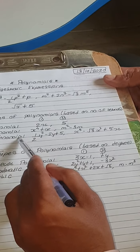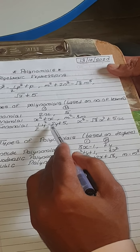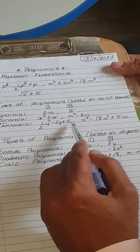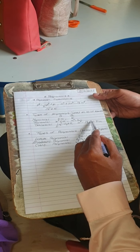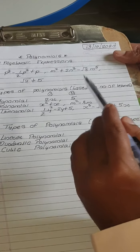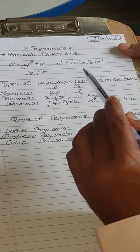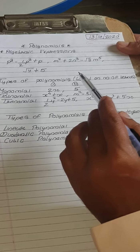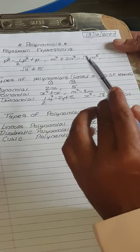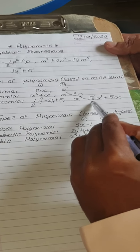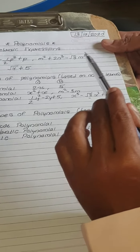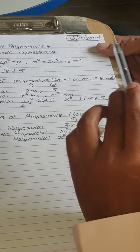Three terms is a trinomial — for example, half y-squared minus 2y plus 5, and x-cubed minus root-3 x-squared plus 5x. Note: only the power should be a whole number. The coefficient or constant can be anything — in this case it is root-3, so students should not get confused. Only the power needs to be a whole number.